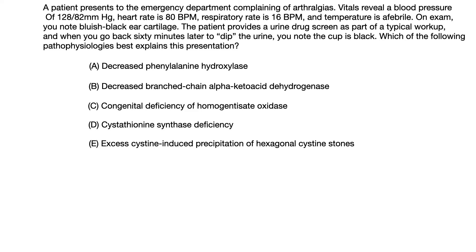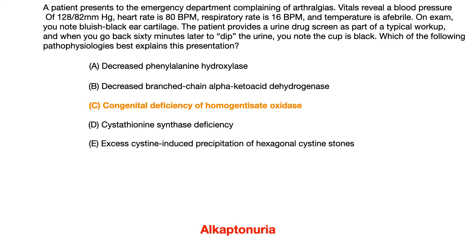The correct answer to this question is choice C, congenital deficiency of homogentisate oxidase. The reason this is the correct answer is because what we're seeing here is alkaptonuria. Let's go back to the vignette and look at the important pieces of information you needed to pull out of the question in order to identify this as alkaptonuria.